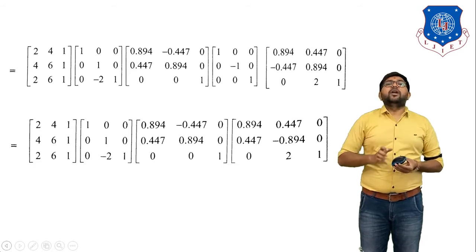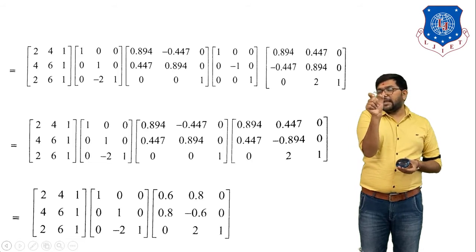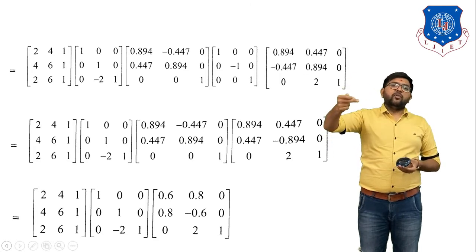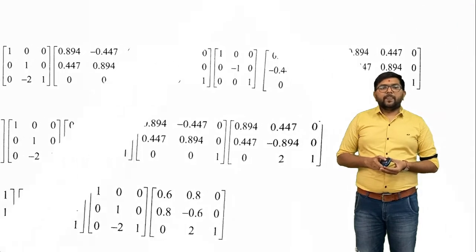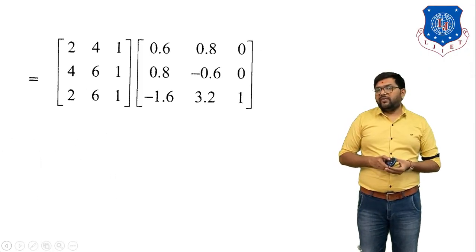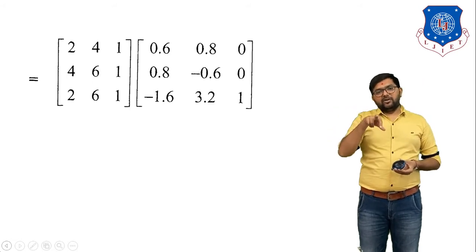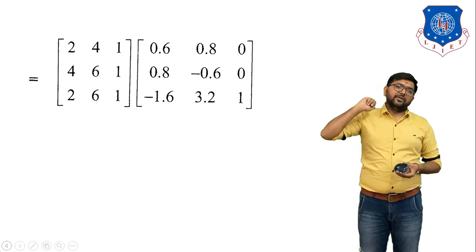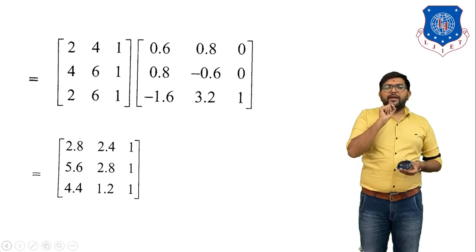Write down the first three matrices as they are and multiply the last two. Continuing the reduction — four matrices become three, then write the first two as they are and multiply the last two. The result of that multiplication is: [0.6 0.8 0 / −0.8 −0.6 0 / −1.6 3.2 1]. Now we have just two matrices remaining — the triangle coordinates and the combined transformation matrix.